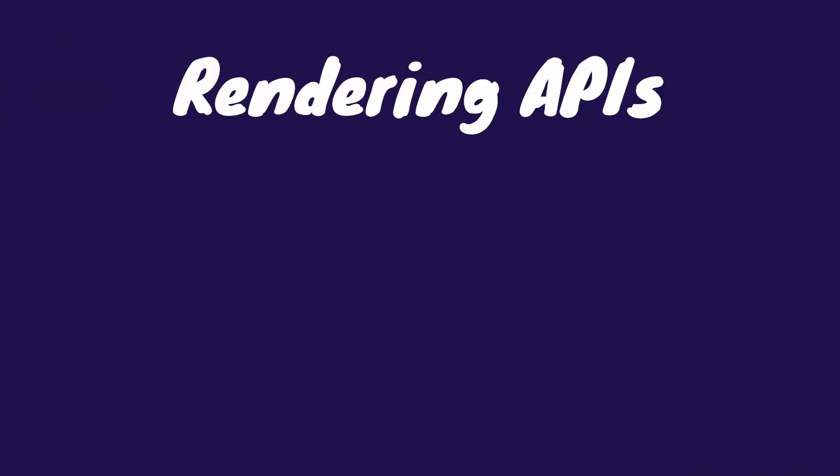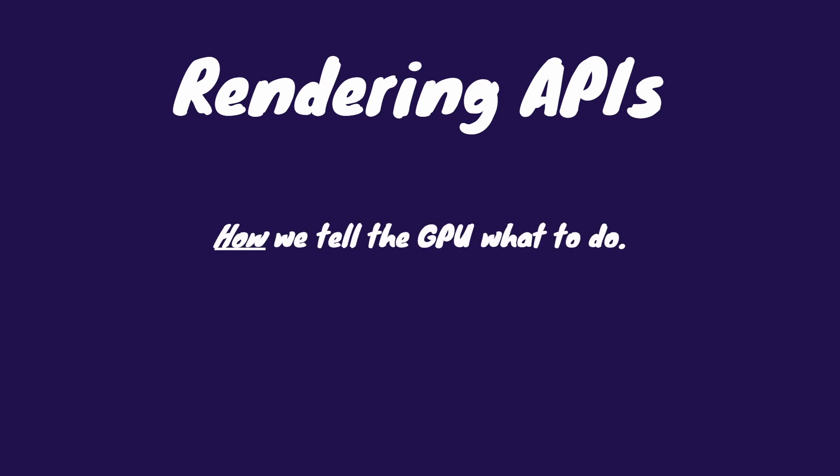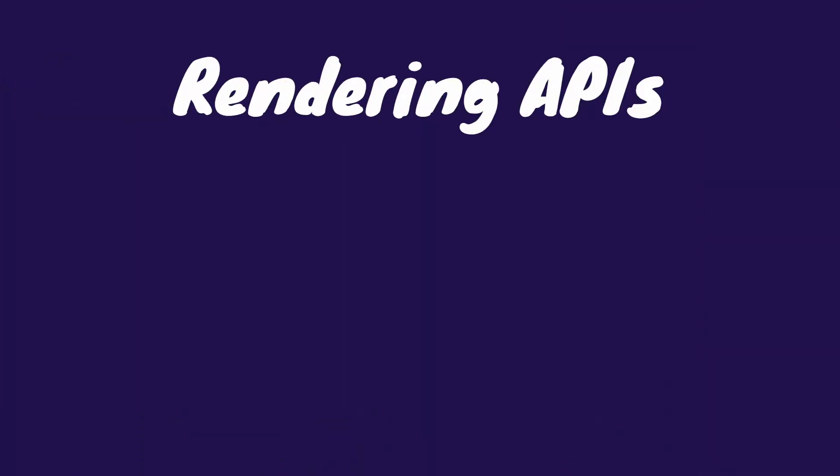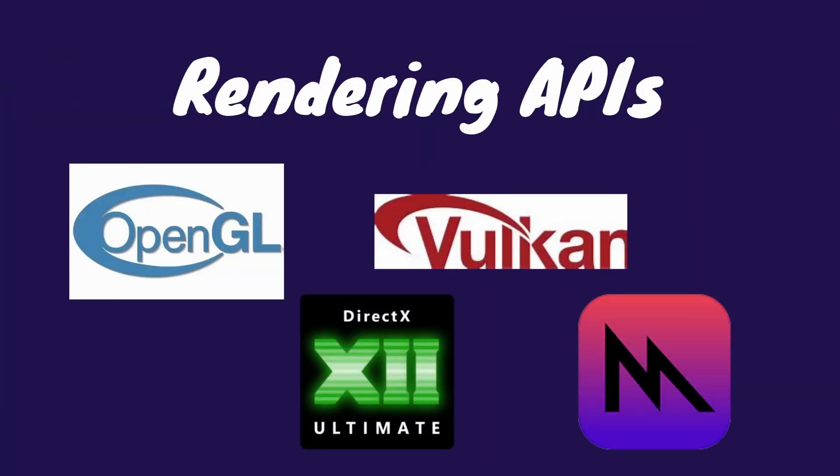We want to know what a rendering API is and how it impacts our choice. A rendering API prescribes a set of conventions for how Godot will format its instructions to the graphics driver on the machine your game is running on. When someone runs your game, Godot has to draw things on the screen, and the way it tells the graphics driver what to draw is the rendering API. Godot will use potentially four different rendering APIs: OpenGL, Metal, Direct3D12, and Vulkan.